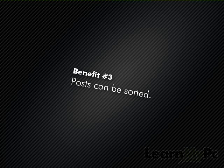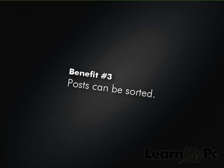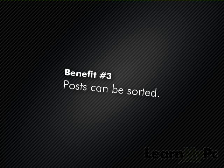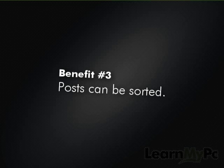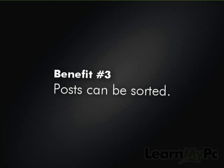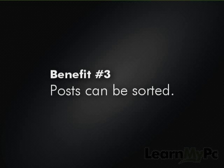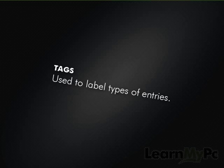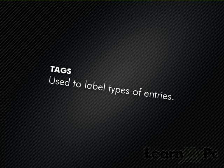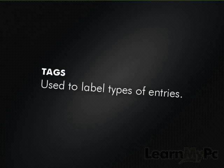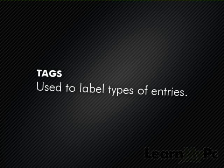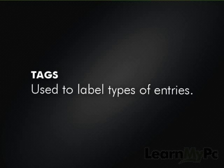Third, blog posts can be sorted by topic. When the author writes a post, he can add labels to his post — words like work, home, family, vacation, etc. Then you, the reader, can instantly sort all their posts by the different topics they have labeled them with. These labels are called tags. Not all authors choose to use these tags, but the ones that do add a huge benefit for the readers of his or her blog.